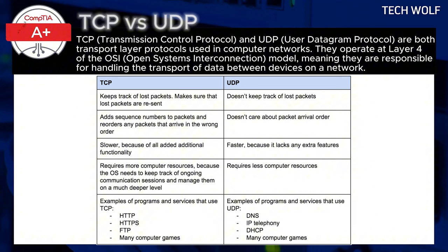TCP is used in situations where accuracy is more important than speed. For instance, when you are browsing the web, sending an email, or downloading a file, it is critical that the entire message arrives correctly and in the right order, which is why TCP is used.